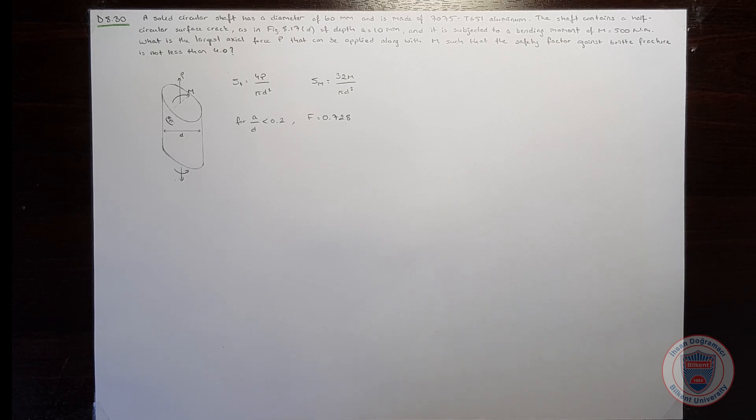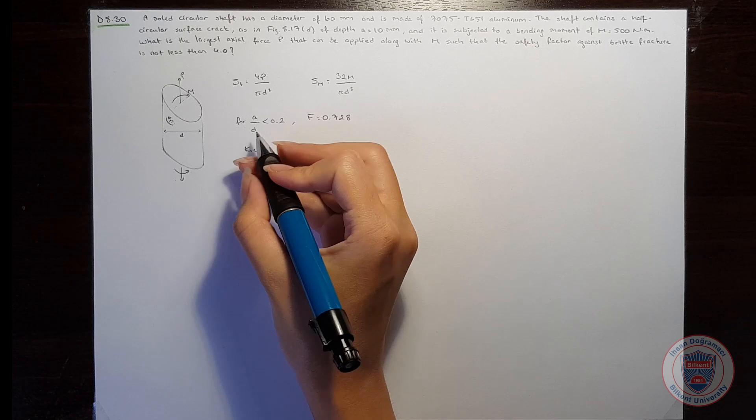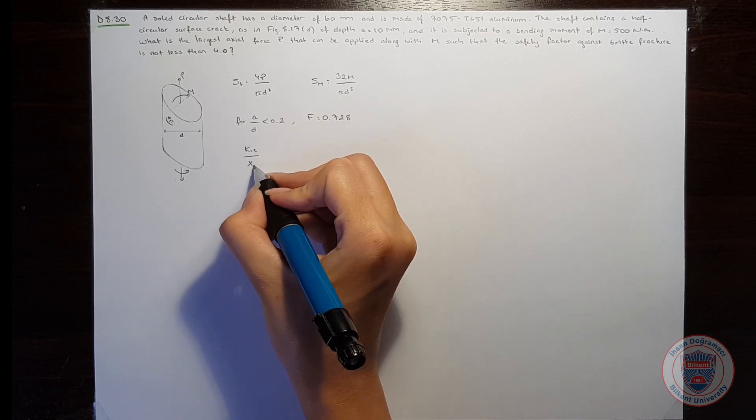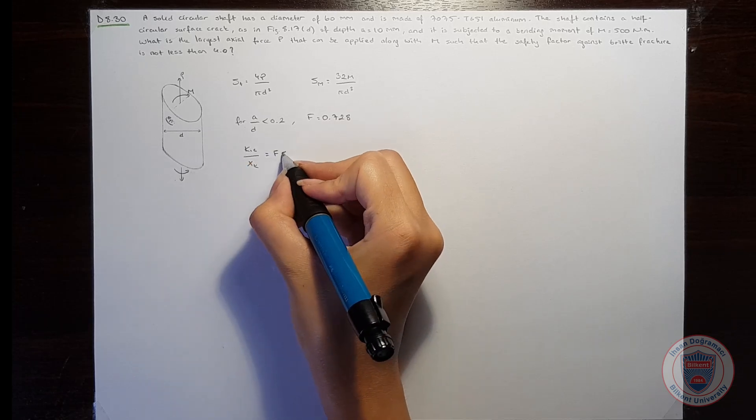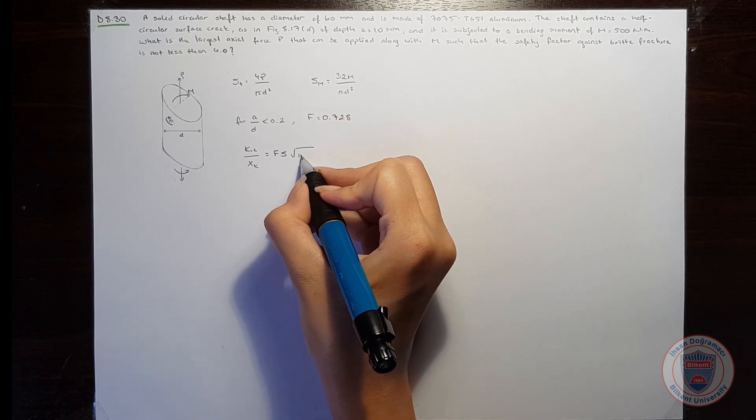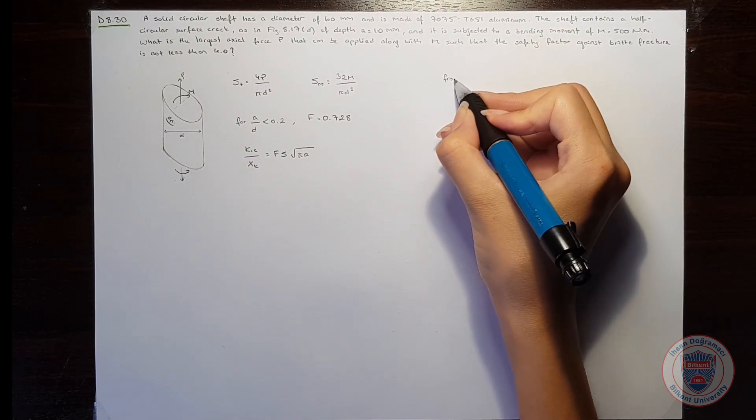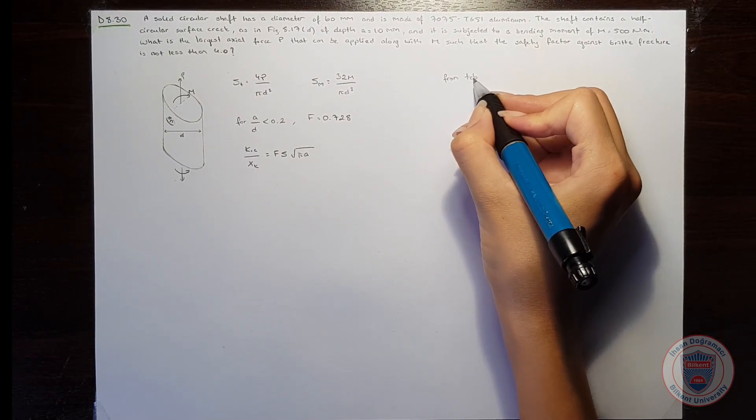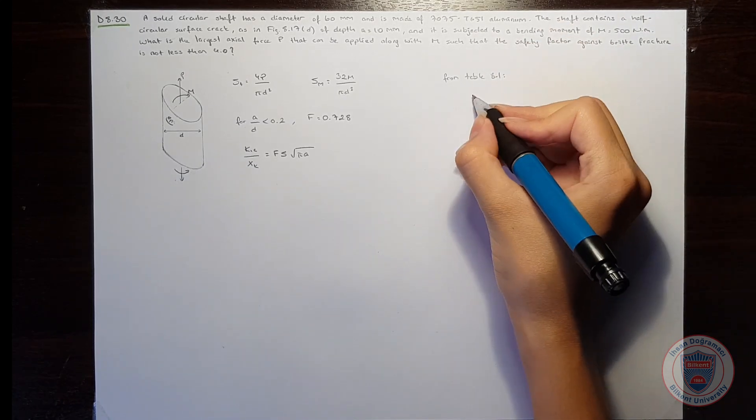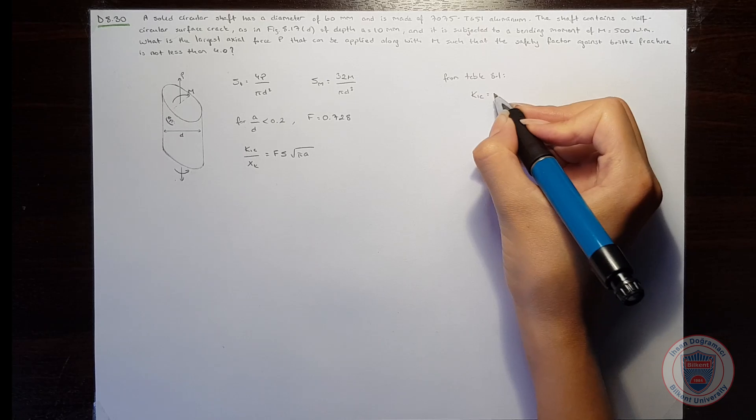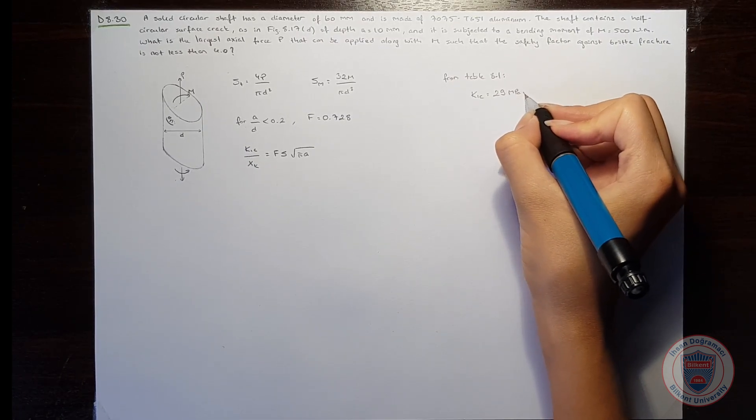From our previous knowledge, we also know that the critical stress intensity factor over the safety factor will be equal to form factor times the stress times square root of pi times crack length. From table 8.1, for this type of aluminum, the critical stress intensity factor is equal to 29 MPa square root meters.